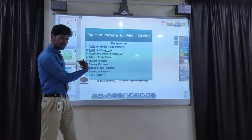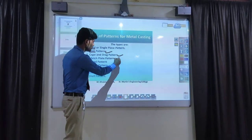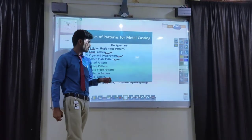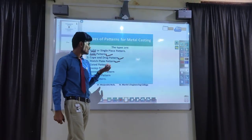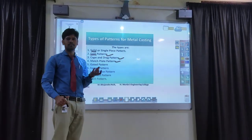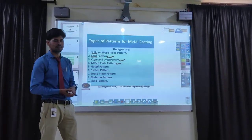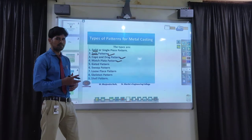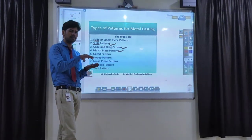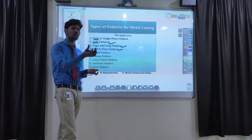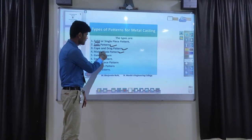The fourth type is called a match plate pattern. Here, any complicated, very small object that is very difficult to place in the cope and drag boxes — for that kind of object, we keep one plate in between the cope and the drag. That plate is called a match plate pattern.